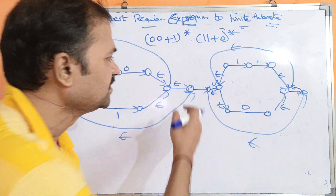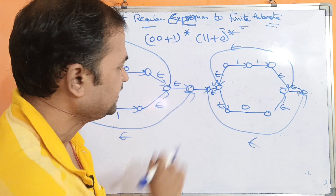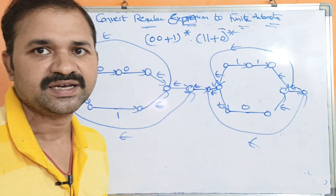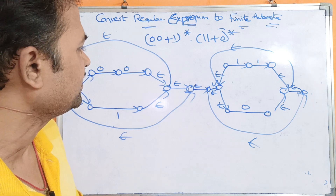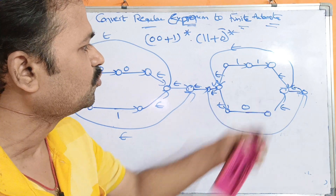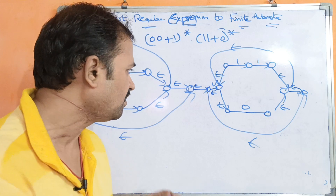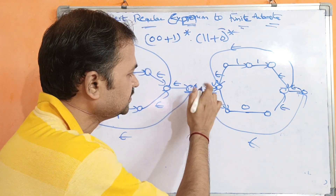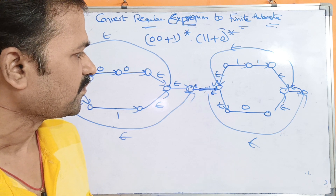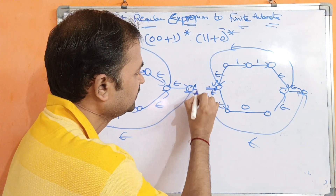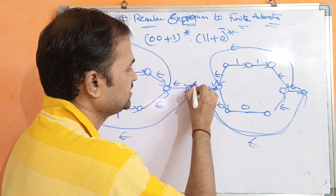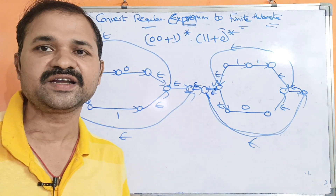Between the two parts we perform concatenation. We can directly establish the connection, write epsilon there, or combine the two states into a single state. It is better to take one more state because we need a transition — this is epsilon. So in this way we can convert a regular expression into finite automata.